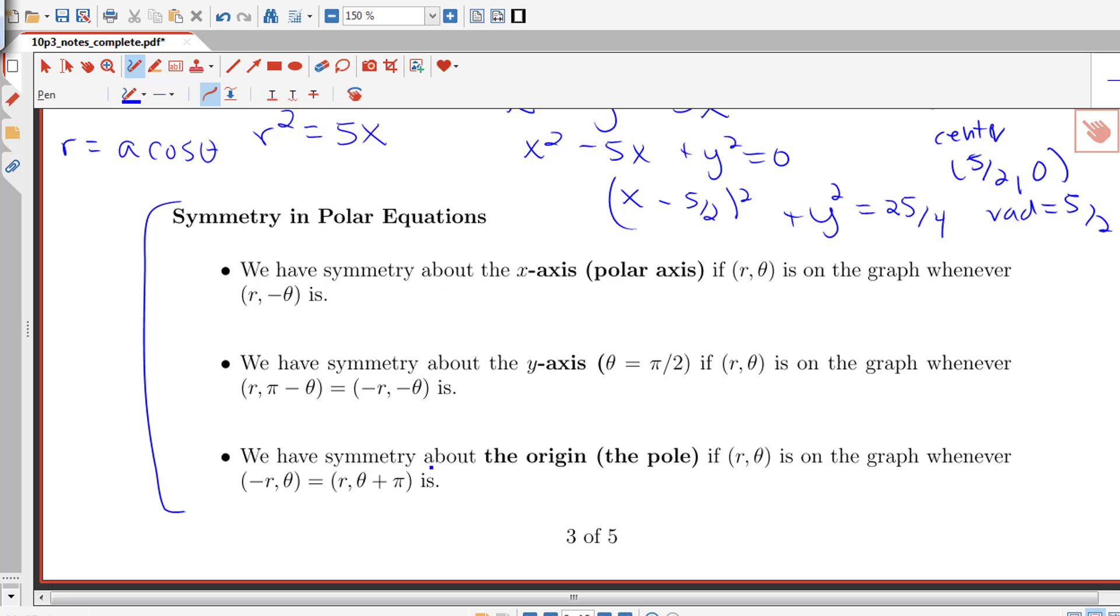We have three different kinds of symmetry that can show up. We can have symmetry about the x-axis, the polar axis. This would happen if I have the point r theta appearing on my graph and also the point r, negative theta. So those would have symmetry about the x-axis.